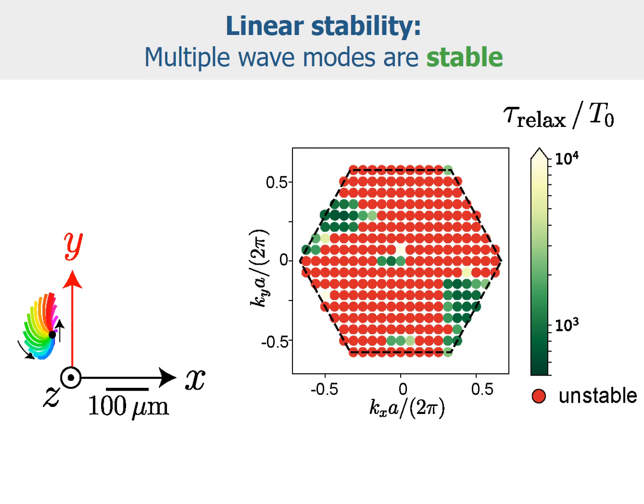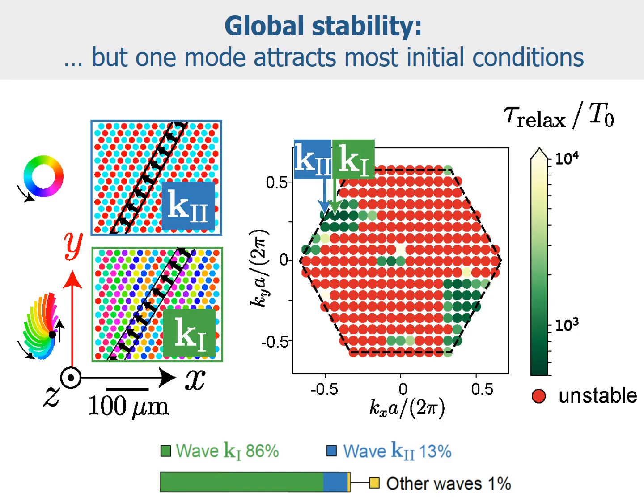From this linear stability analysis, we observe that there are many wave modes that are stable, shown in green with their respective relaxation times. We can also ask for global stability: if we start with random initial conditions, in which metachronal wave mode would our cilia carpet end up? We find the lion's share of initial conditions — about 99% — converge to a dominant wave mode, namely the green wave vector k1 and the very similar blue k2.